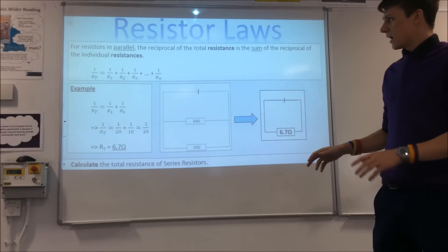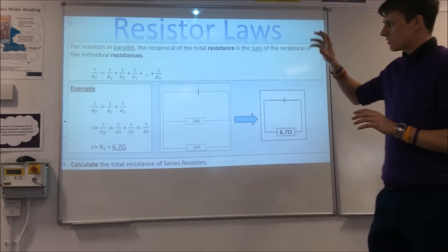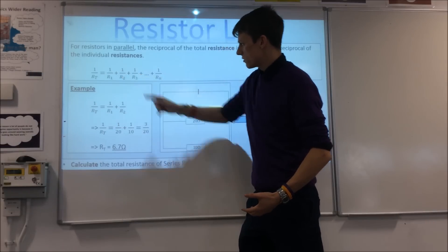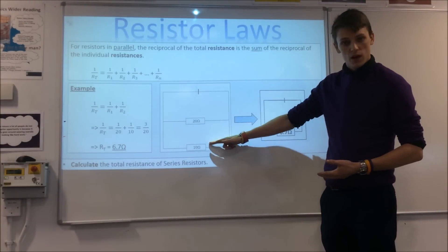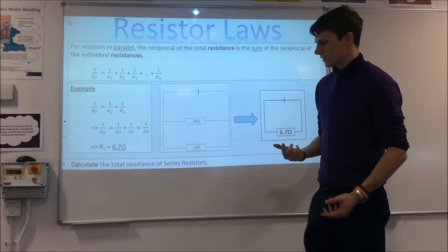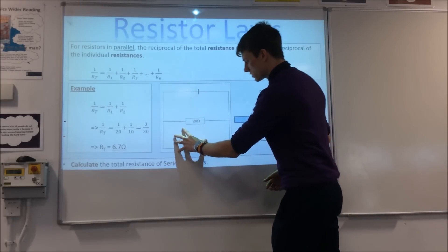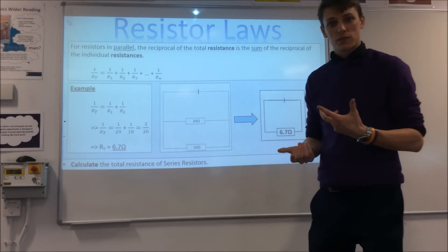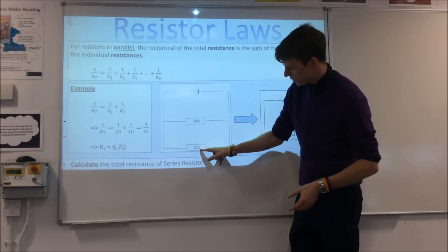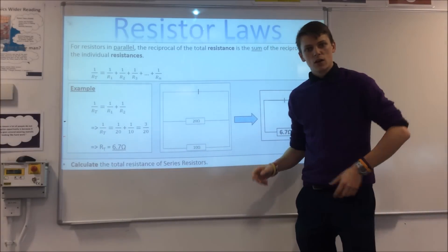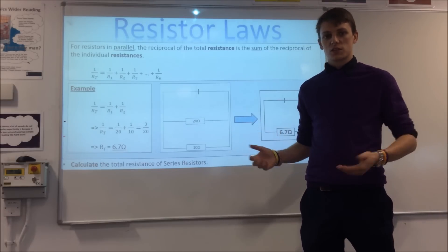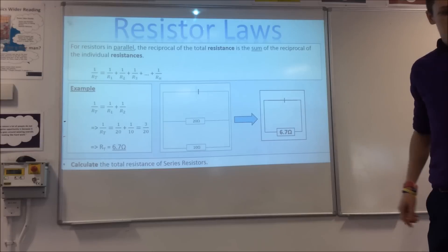If we look at resistors in parallel, there's what's called a reciprocal rule: 1 over the total resistance equals the sum of 1 over each resistor in parallel. Here we've got a 20-ohm and a 10-ohm in parallel, so we add 1/20 to 1/10 to get 3/20, then flip that over to get the overall resistance. A quick check: you should end up with a value smaller than any individual resistor in parallel, because opening more pathways means more current flows, so overall resistance is smaller.